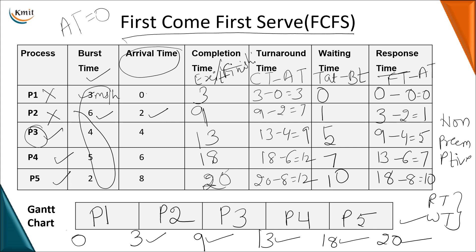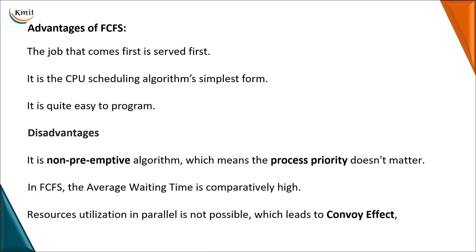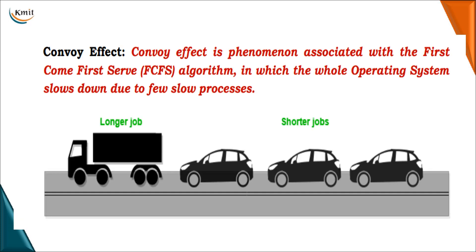A non-preemptive algorithm means once the CPU is allotted to a particular process, it will not be taken away until that process completes execution. After calculating turnaround time, waiting time, and response time, we must also calculate the average turnaround time, average waiting time, and average response time — these are compulsory for every algorithm. The advantage of FCFS is that it is very simple and easy to program, but since it is non-preemptive, process priority is not considered and waiting time is very high.